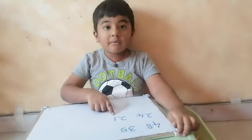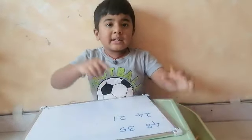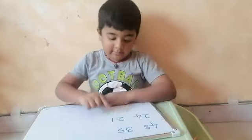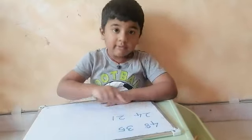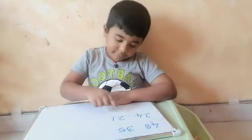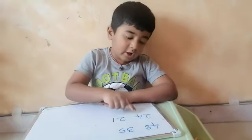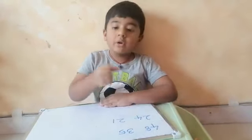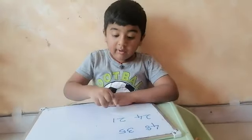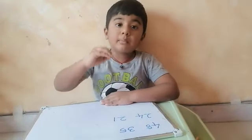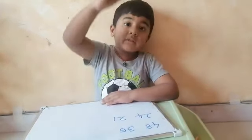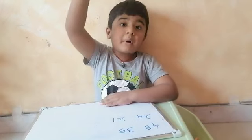24 and 21. The tens place is the same, so now look at your ones place: 1, 4. 21 is the smaller number. 24 is the bigger number.